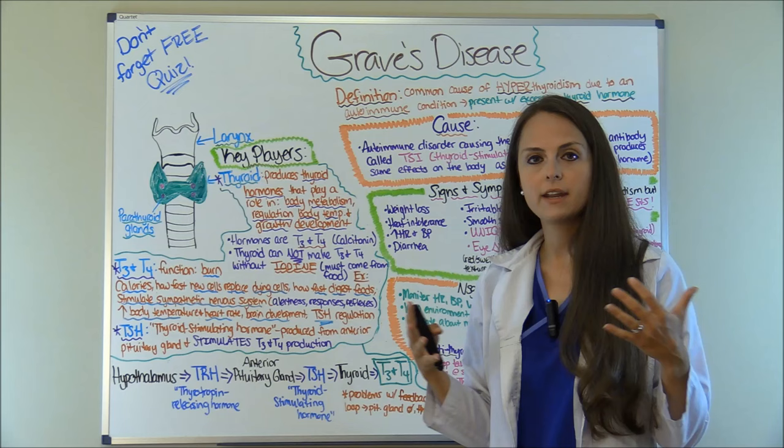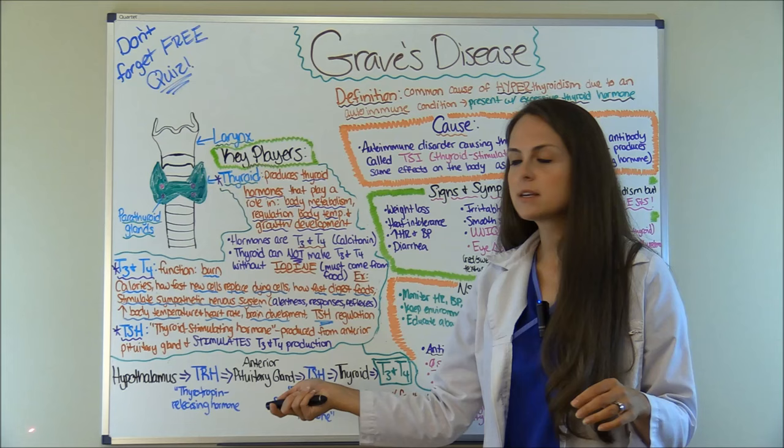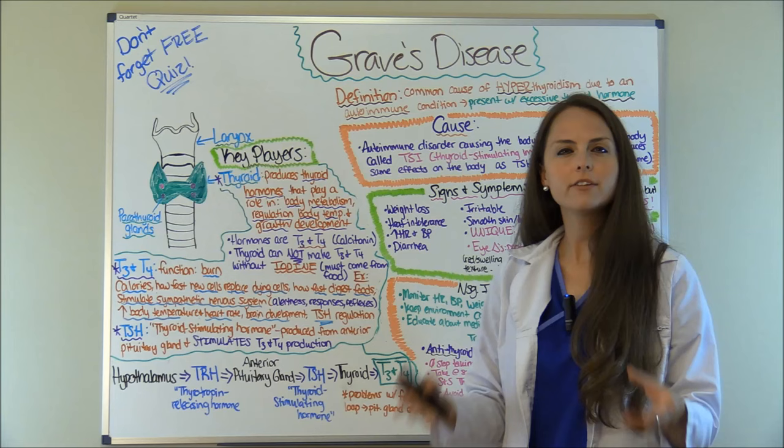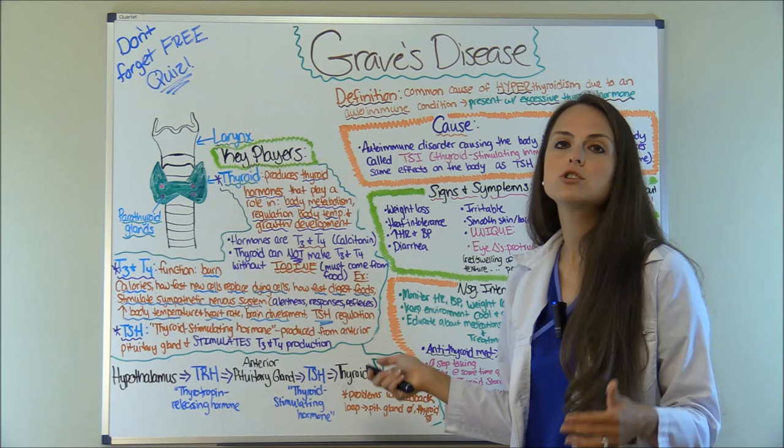What happens in the body is you have a negative feedback loop, and your hypothalamus, anterior pituitary gland, and your thyroid gland all work together. Your hypothalamus releases TRH, which is thyrotropin-releasing hormone. Whenever that releases, your anterior pituitary gland picks that up and says it's going to release TSH, which is thyroid-stimulating hormone. And then this causes your thyroid gland to release thyroid hormone, T3 and T4.